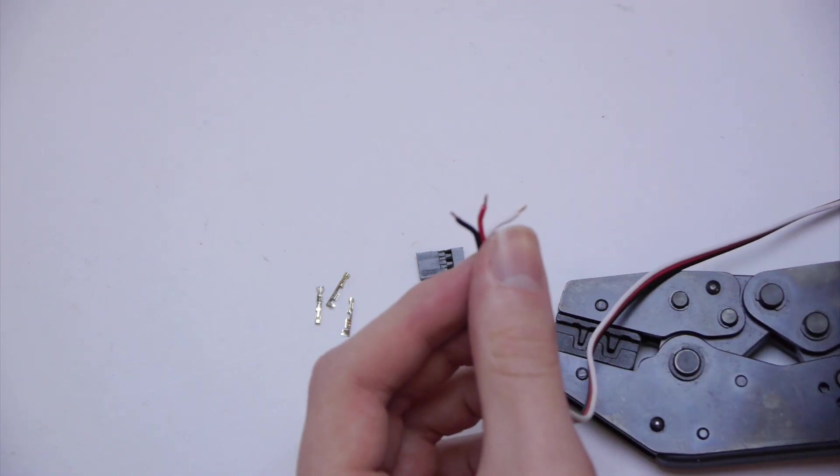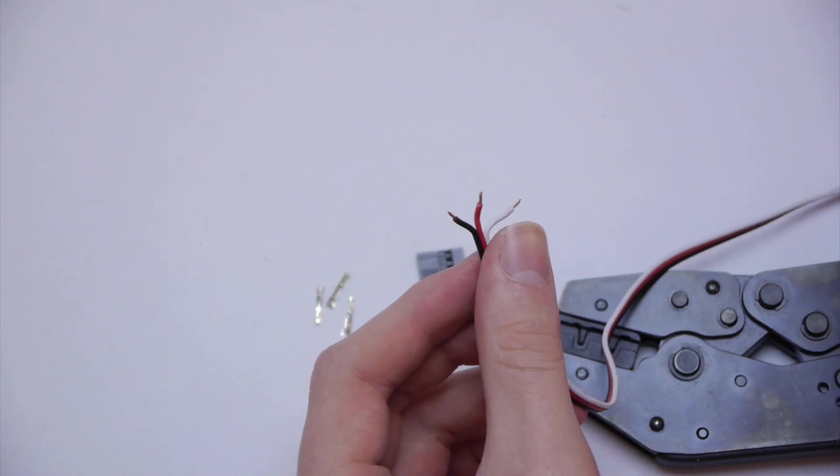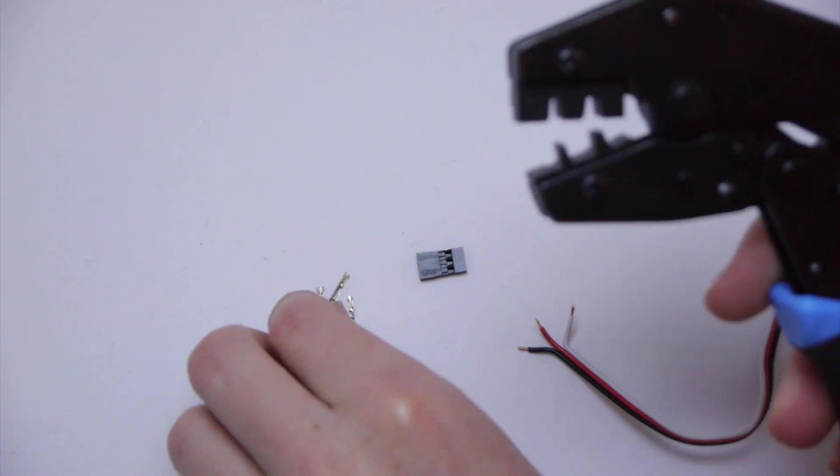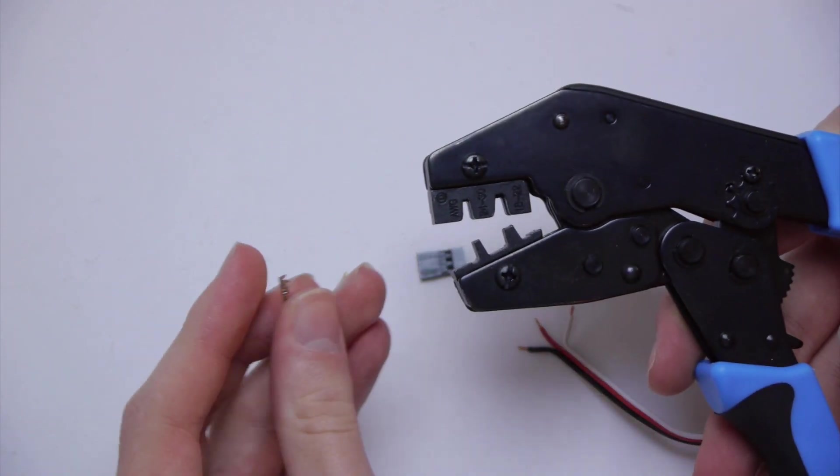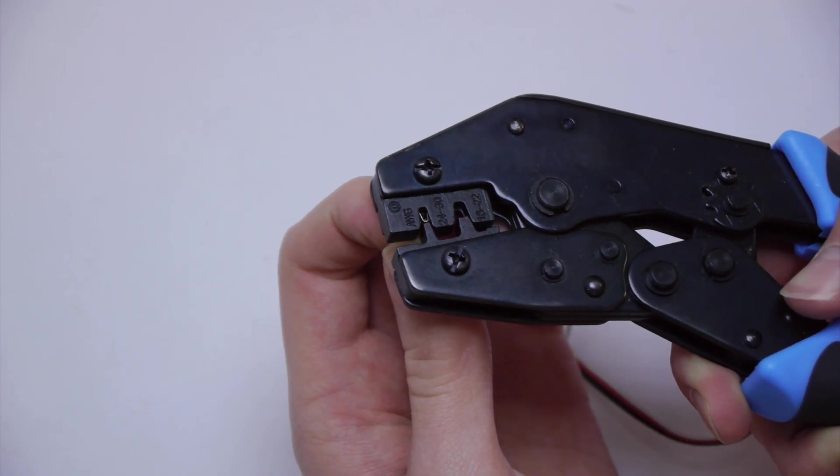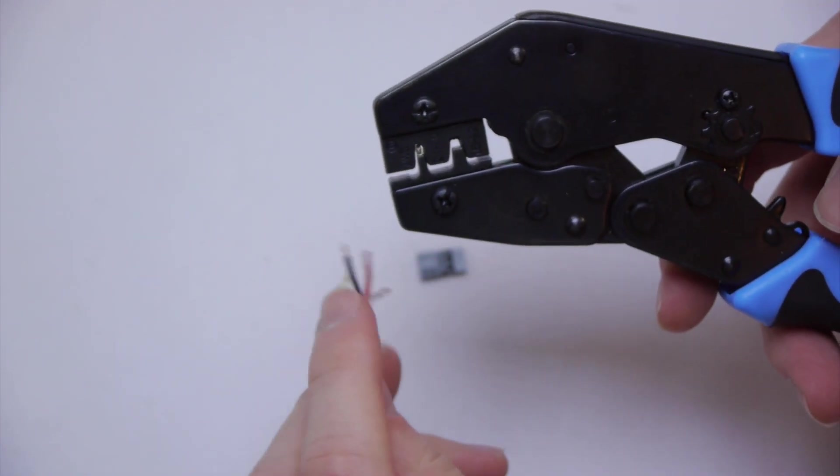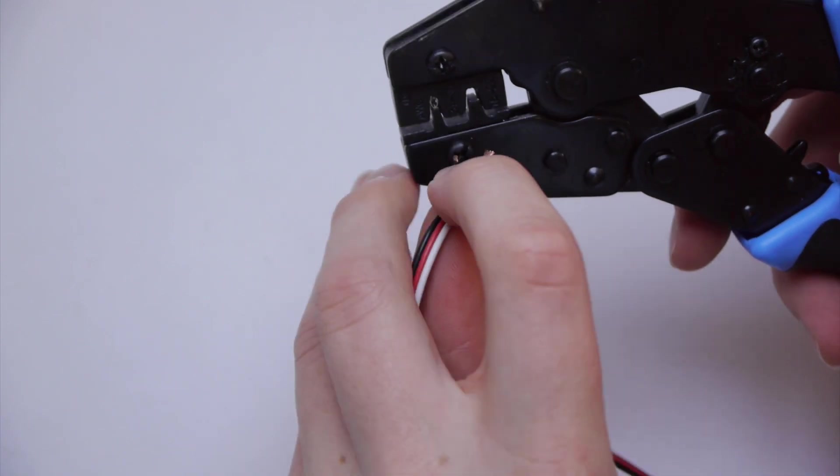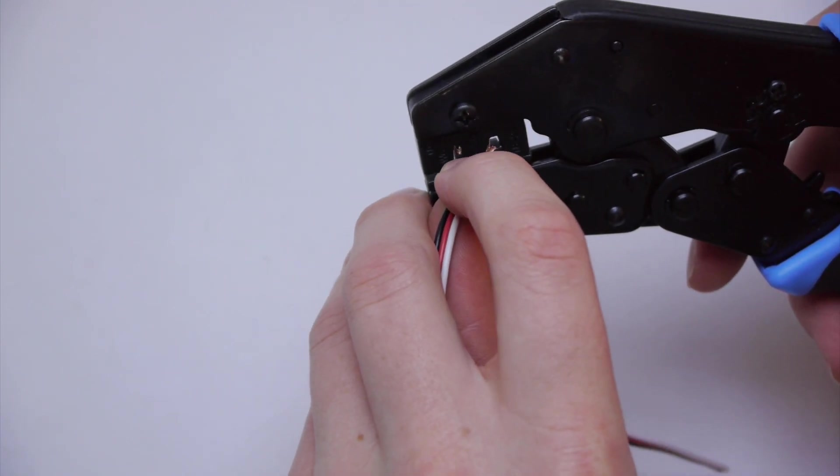Okay now that those are done, take your crimper, and put the first connector into it. Now to actually crimp the wire, all we need to do is put the wire in here. Make sure it's flat.